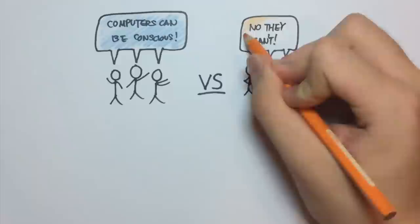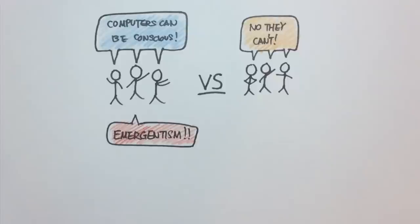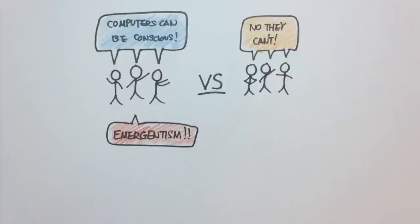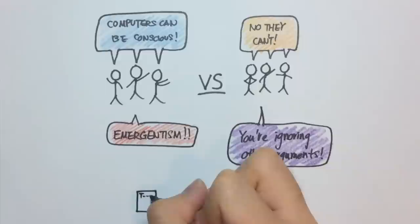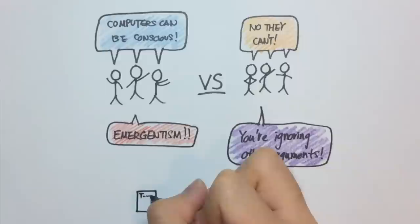The question of whether computers can be conscious is still an ongoing debate with rich and diverse arguments. According to emergentism, yes, it is possible that computers can acquire something similar to consciousness. However, it is worth noting that there are a variety of other arguments that suggest why computers can't, or can, have consciousness.